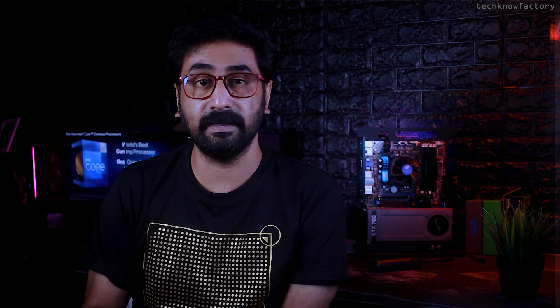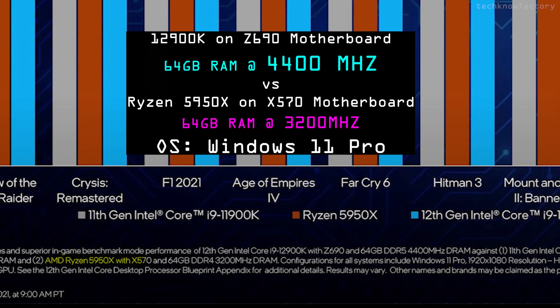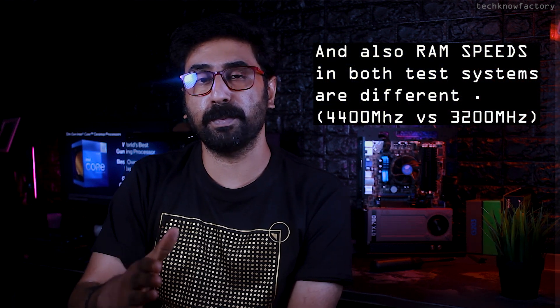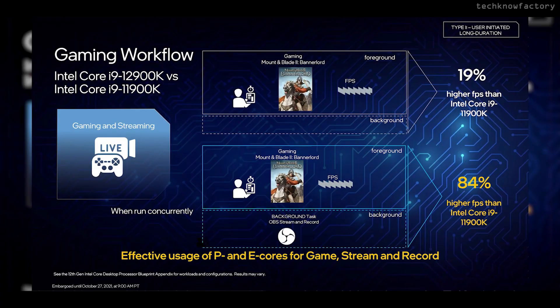However, we should not trust Intel's own benchmarks without third-party verification. We need 100% independent third-party reviews and benchmark results. There are known issues in Windows 11 affecting Ryzen processors — including cache memory issues and thread allocation issues — which could skew comparisons. We should wait for updated reviews after those Windows 11 issues are resolved.